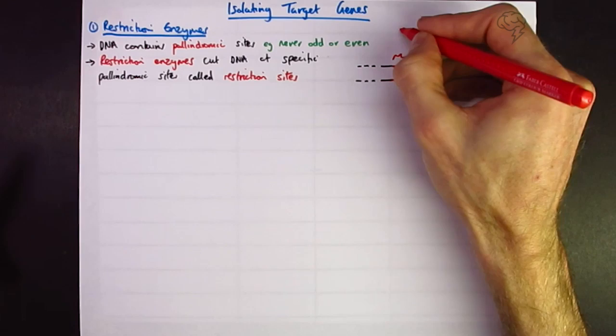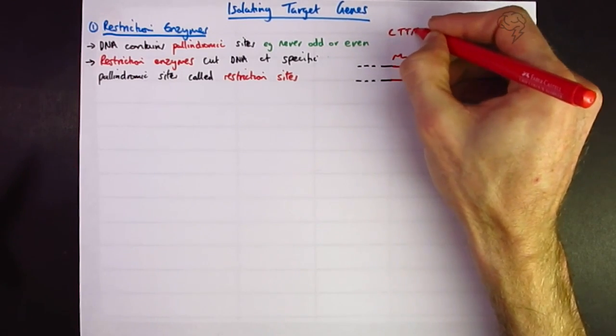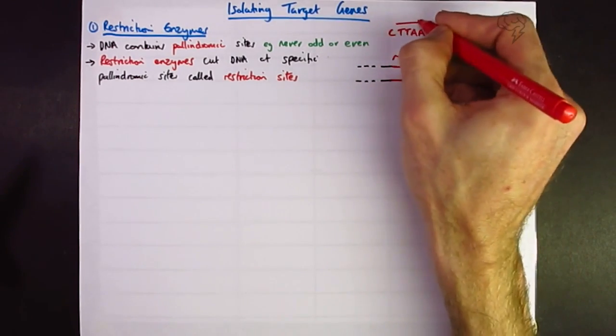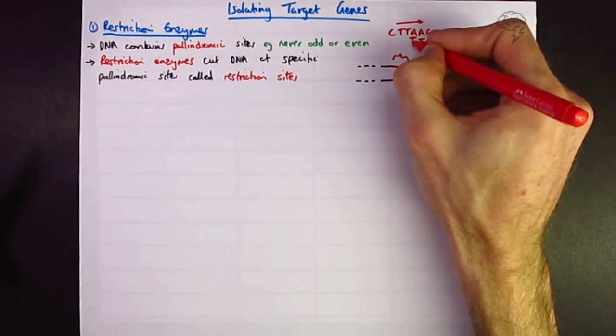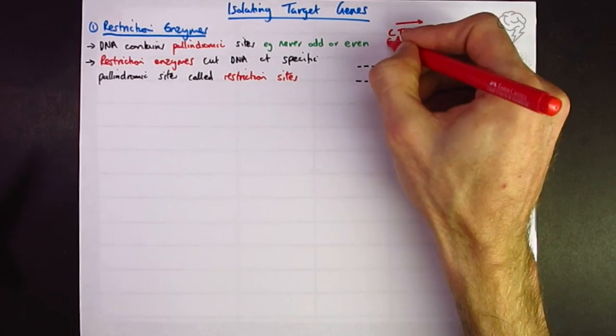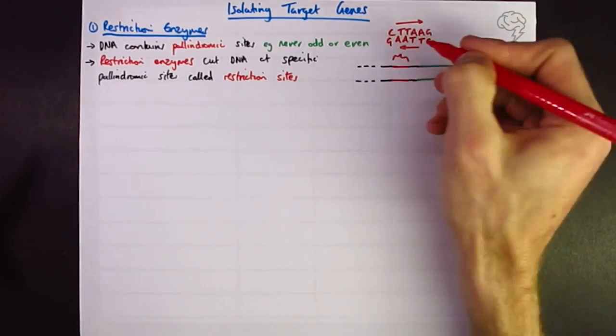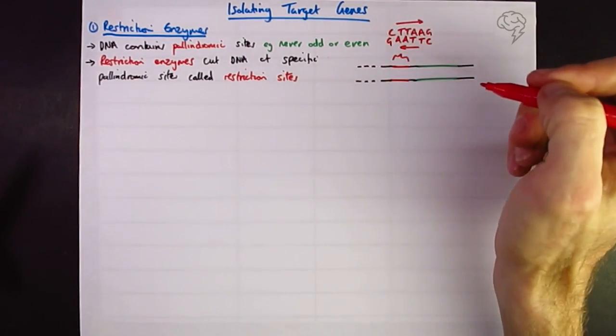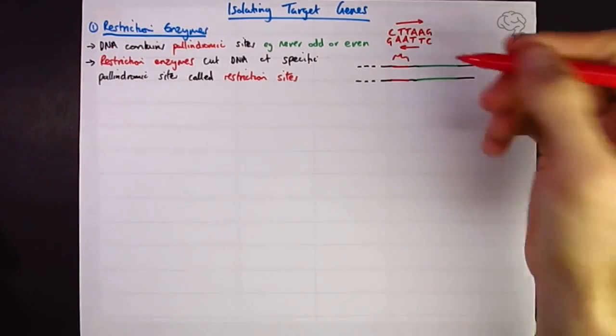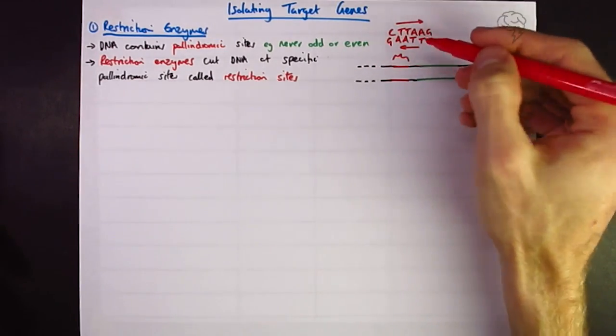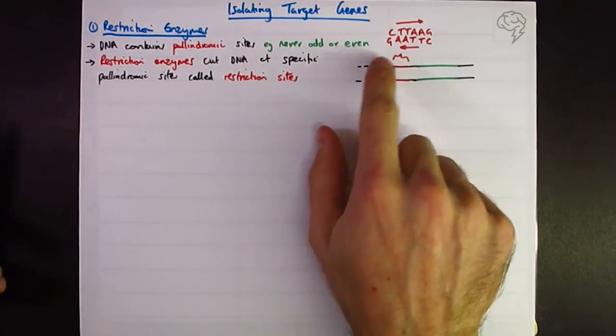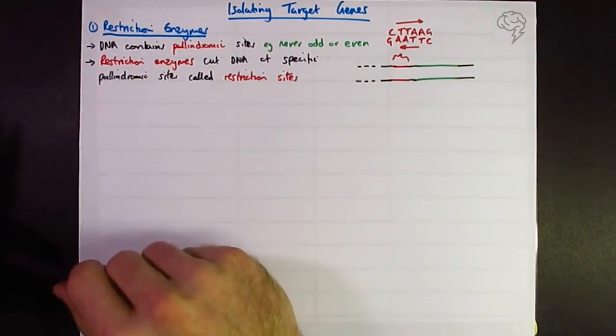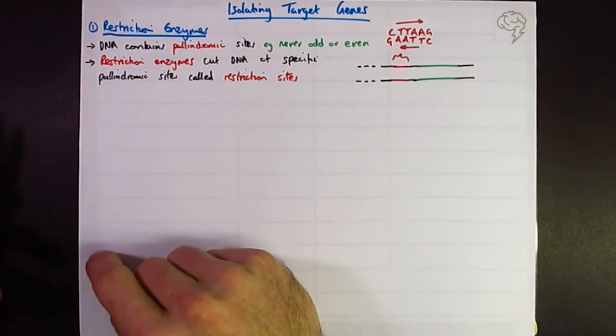We could have something like C, T, T, A, A, G in this direction. And obviously if we do our complementary pairs, C, T, T, A, A and G in this direction. So that's what we mean by our palindromic site. As I said, you don't need to remember them specifically, but you need to be able to recognize them and know that they are the substrate effectively for the restriction enzymes. That's where the active site joins or binds onto.